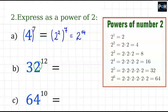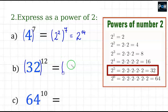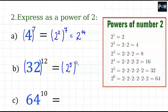In example B, I do the same, because 32 is the same as 2 to the power of 5. So instead of the number 32, I put it in the bracket: instead of 32, I can use 2 to the power of 5, and to the power of 12 as well. Now I multiply 5 by 12 — that is 2 to the power of 60.